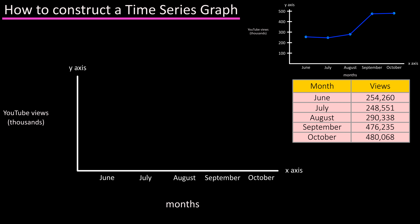Next, from the table find the highest value in the table: 480,068. Round up to 500,000 and we'll mark that as 500 somewhere near the top of the y-axis. Then make four more marks of equal distances going down the y-axis, marking them 400, 300, and on down to 100.